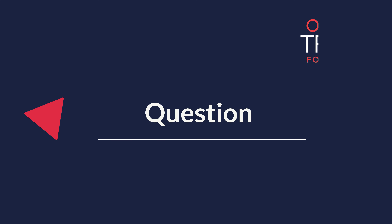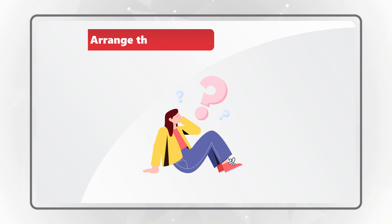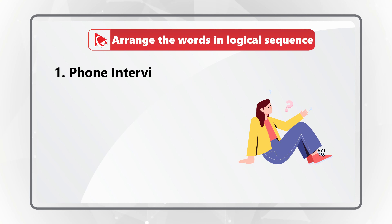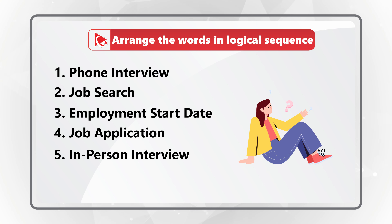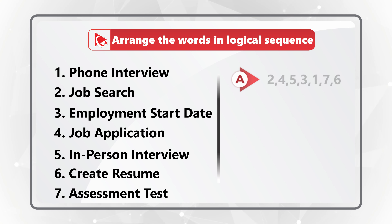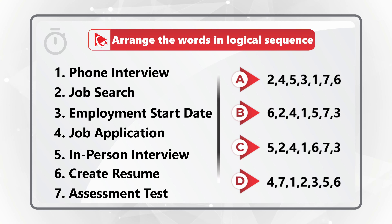Here's an amazing question which tests your analytical skills, logical reasoning, as well as your knowledge of the employment process. You need to arrange the words into a logical sequence: phone interview, job search, employment start date, job application, in-person interview, create resume, and assessment test. You have 4 different choices: A, B, C, and D. Take a close look — pause this video to see if you can come up with the answer.